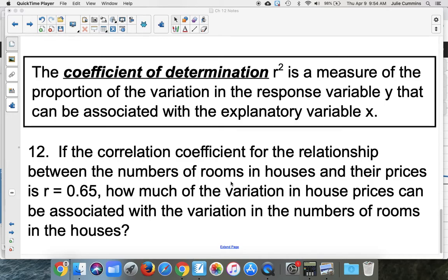There are lots of other factors that go into that, like location and how well the house has been kept up. But number of rooms and prices does have a relationship. So in that relationship, r is 0.65.